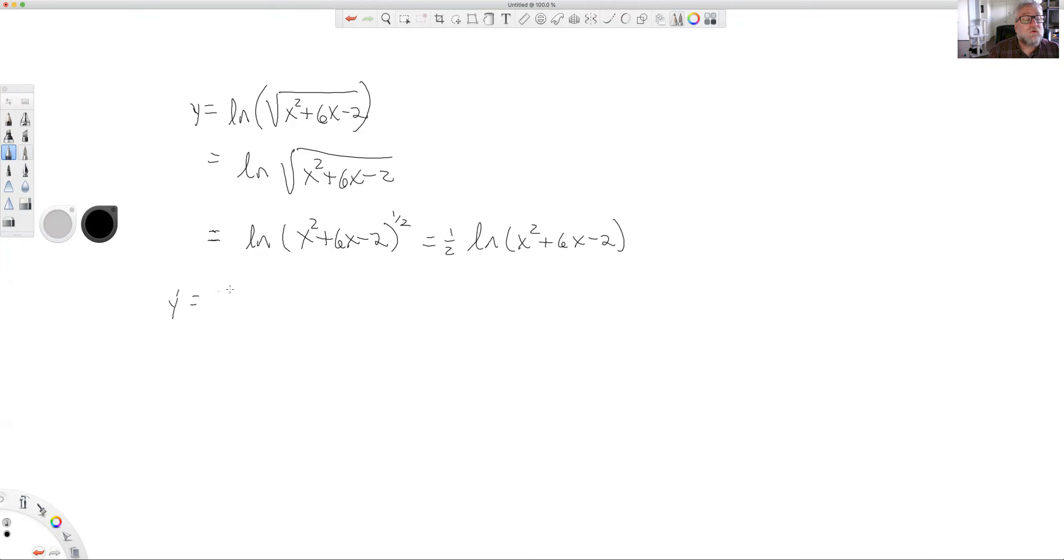So y prime equals 1 over (x² + 6x - 2)^(1/2) times the derivative of all this stuff, which would be 1 over (x² + 6x - 2) times the derivative of the inside from our happy little chain rule, 2x plus 6.